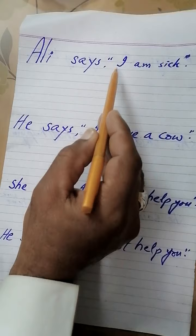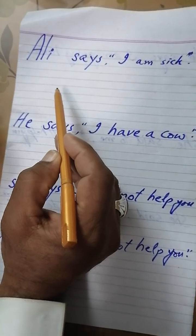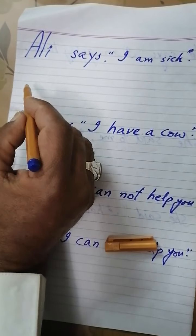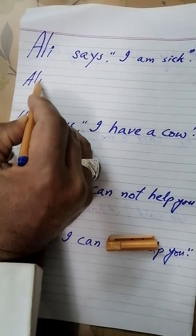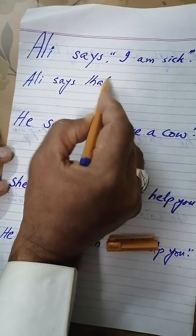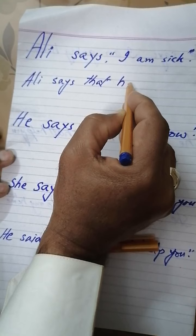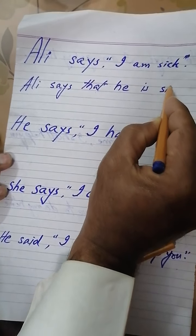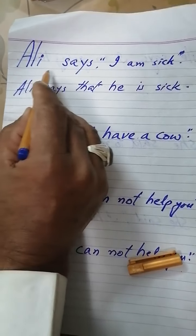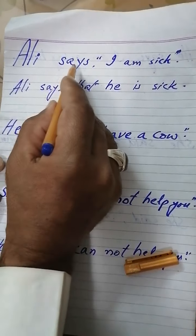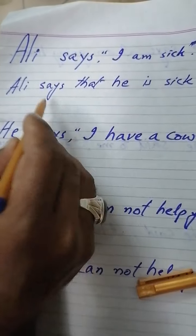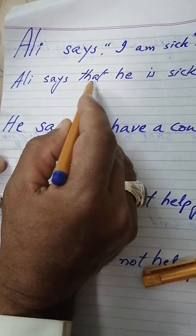Direct narration: 'Ali says I am sick.' Now let us change it into indirect narration. 'Ali says' becomes 'Ali says that he is sick.' So the indirect narration is: Ali says that he is sick.